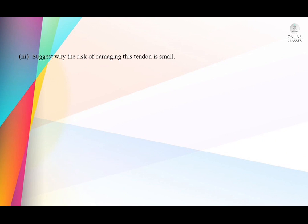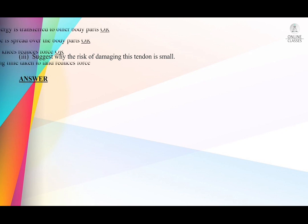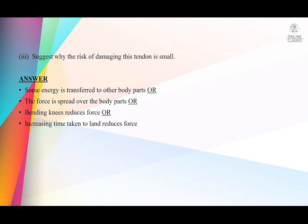The question asks: suggest why the risk of damage to the tendon is small. There are four possibilities: some energy is transferred to other parts of the body when you jump, which prevents complete injury. The force is spread over body parts. Bending the knee reduces force. Increasing the time taken to land also reduces force, because from Newton's second law, F is inversely proportional to t. So as time increases, force reduces.